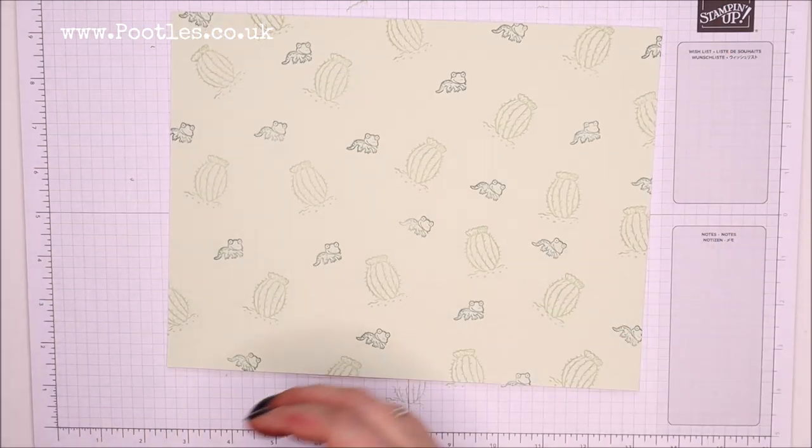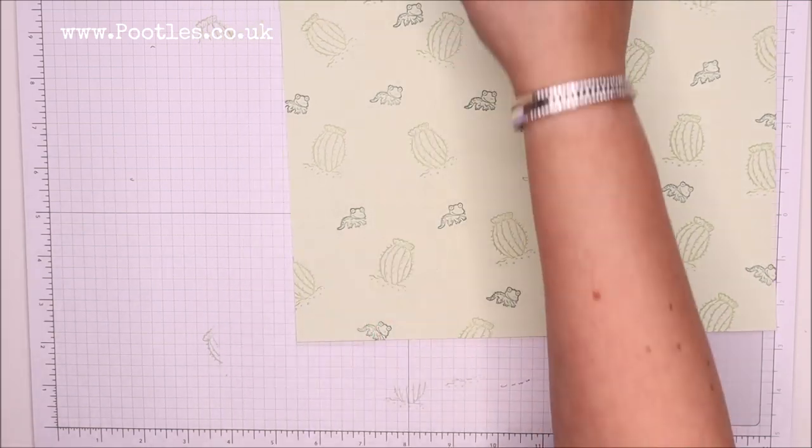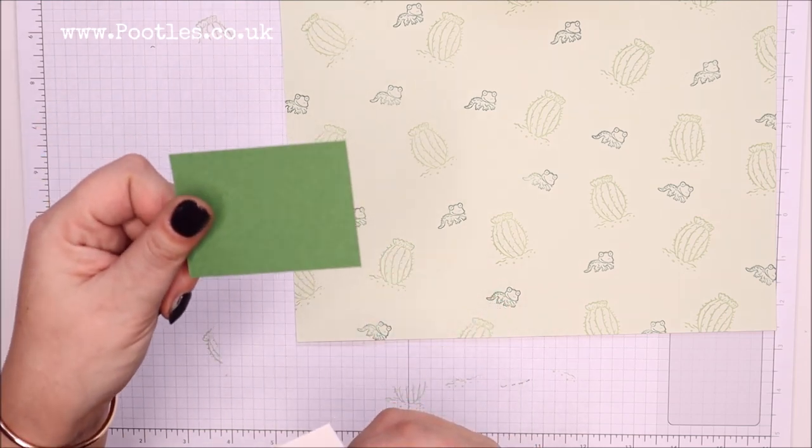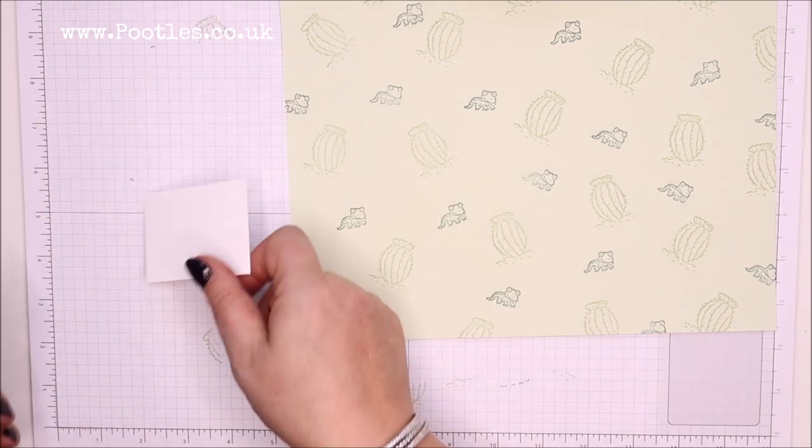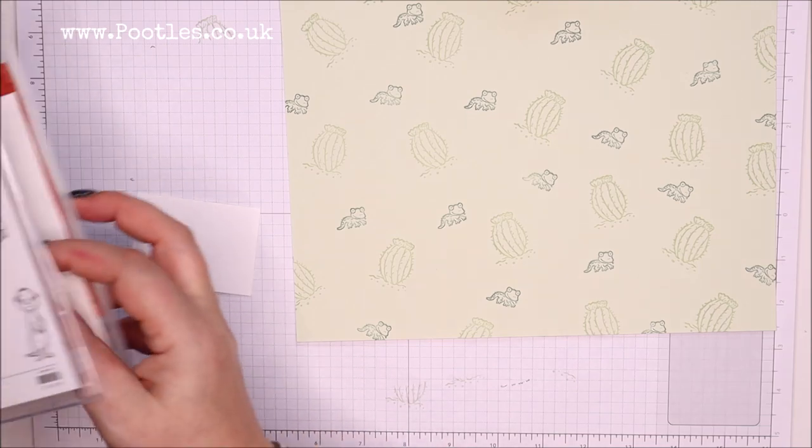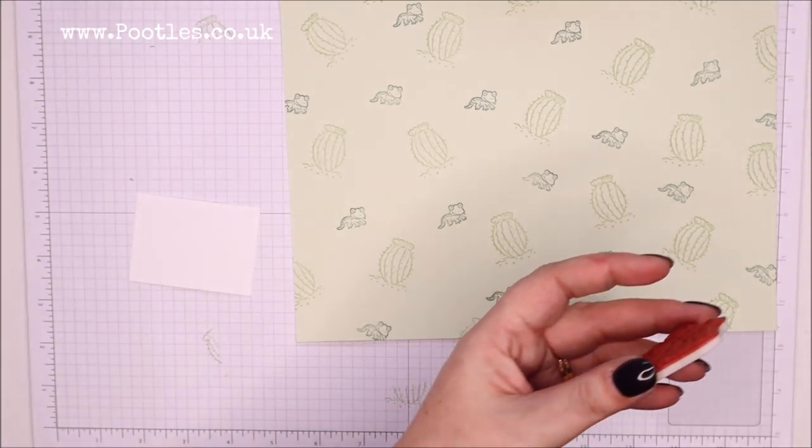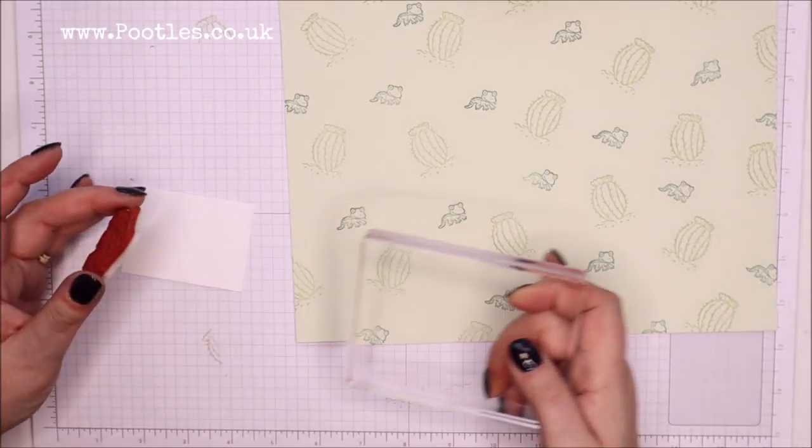And then while I've got my inks and everything on the go, I've got two panels for the front. This one measures two and seven eighths by two and one eighth, and this is two and three quarters by two inches, which is pretty much perfect size for that gang of meerkats.